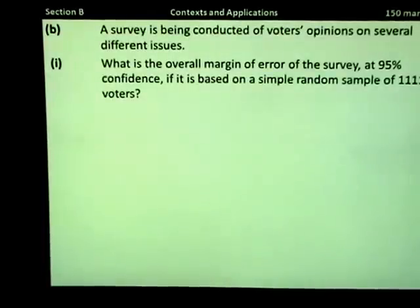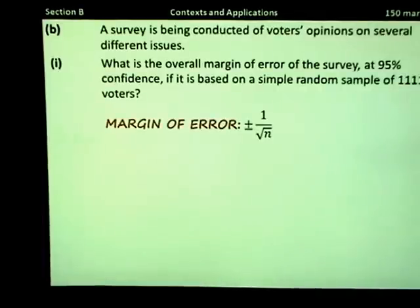Part B, a survey is being conducted of voters' opinions on several different issues. What is the overall margin of error of the survey at the 95% confidence, if it is based on a simple random sample of 1,111 voters? Your margin of error is determined by the sample size. The larger the sample size, the smaller your margin of error.